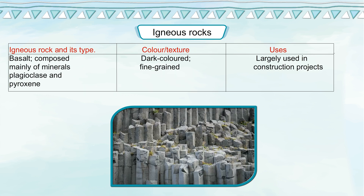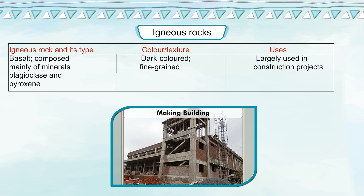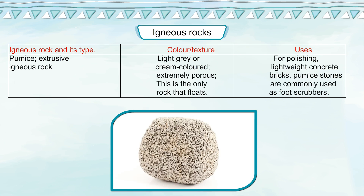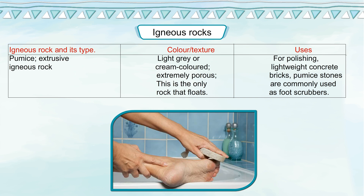Basalt is composed mainly of minerals plagioclase and pyroxene. It is dark coloured and fine grained, and is largely used in construction projects. Pumice is an extrusive igneous rock, light grey or cream coloured and extremely porous. It is the only rock that floats, and is used for polishing and lightweight concrete bricks. Pumice stones are commonly used as foot scrubbers.